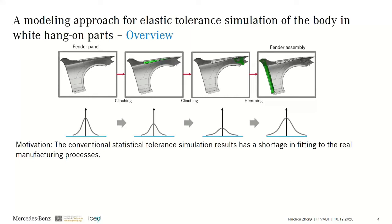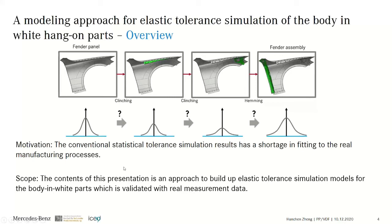However, the rigid tolerance simulation approach has a shortcoming in fitting to reality, because all parts in the simulation system are assumed to be rigid, and the influence of manufacturing processes on assembly deviation is not considered in the simulation model. By introducing FBM simulation, we now have the possibility to involve elastic deformation in the tolerance simulation model. But the proper modeling approach still needs to be worked out and validated, especially for large engineering parts with complicated geometries. Therefore, in this work, I will introduce an approach to build an elastic tolerance simulation model with 3DCS, along with a comparison of simulation results with measurement data.